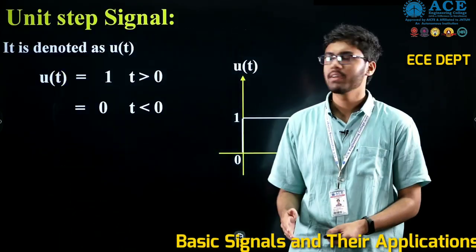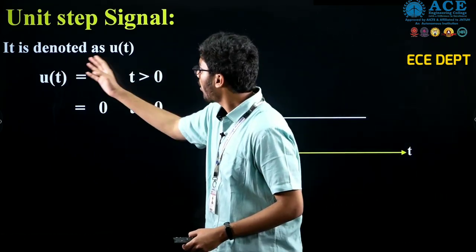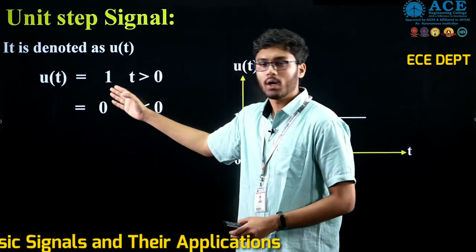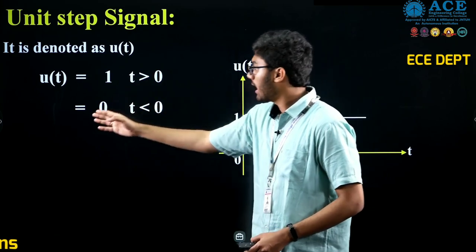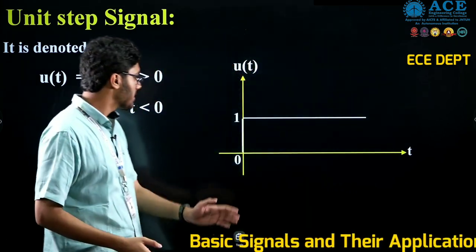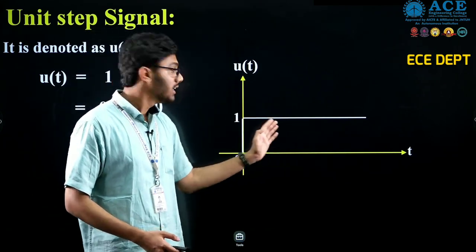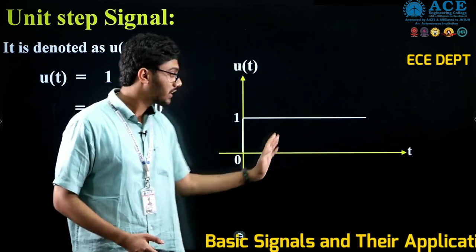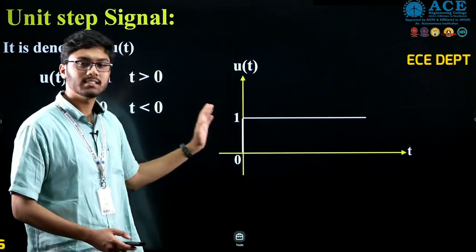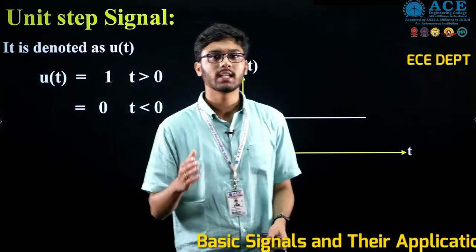Next, we have the unit step signal. A unit step signal is represented by u(t) and defined as: u(t) equals 1 for t greater than 0, and 0 for t less than 0. Graphically, at t equals 0 there is a sudden rise, and after that the signal has an amplitude equal to 1. For t less than 0, it is 0.